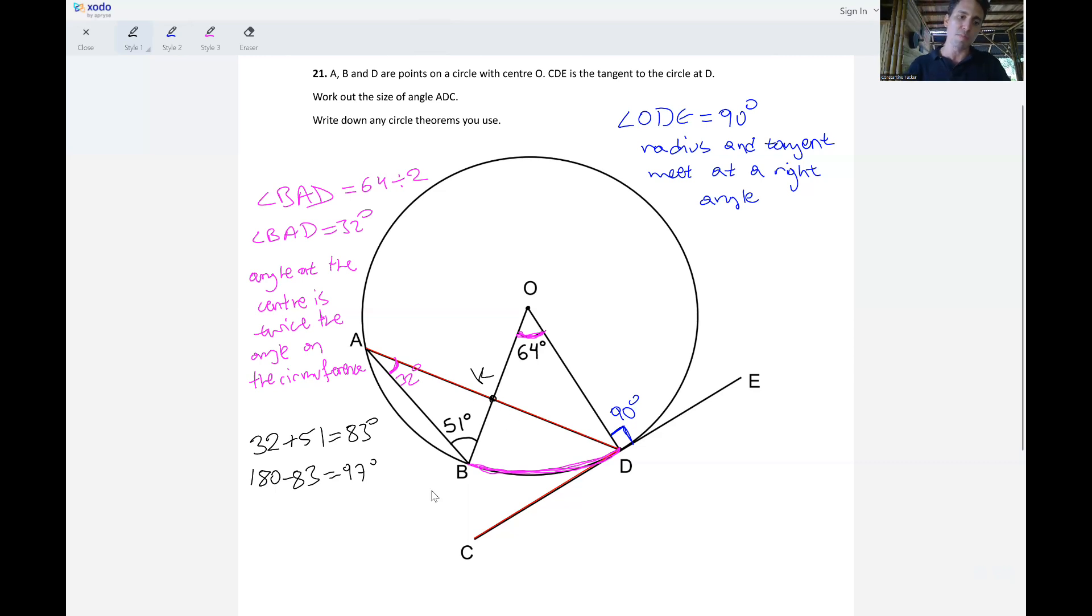Now if we take that away from 180, we've got 180 minus 83 that will give us 97 degrees. So we know that the angle AKB is going to be 97. We need to make sure that we justify this. We could say that angles in a triangle add up to 180, or slightly more lazy, angles in a triangle sum to 180.